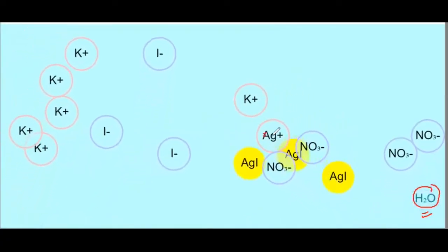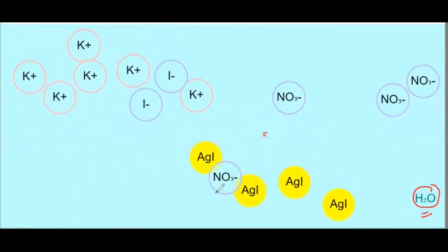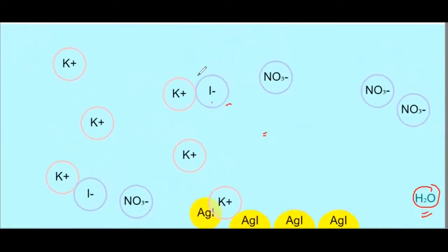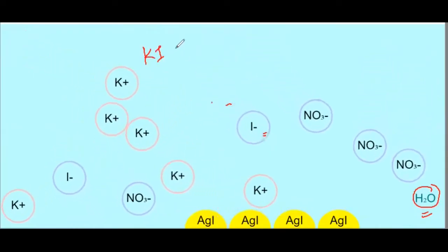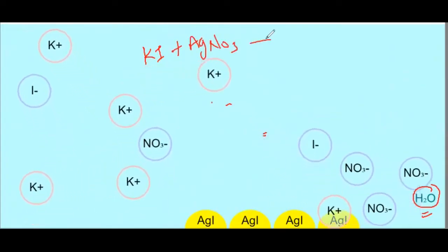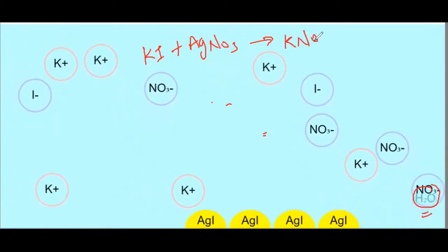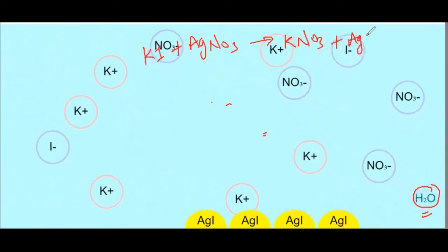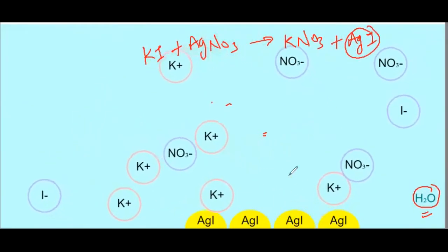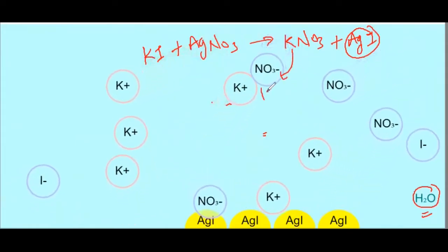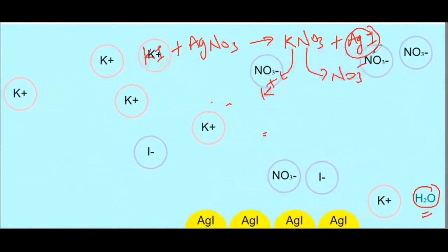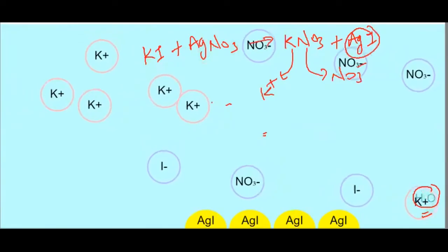जब एक silver ion, iodide ion के साथ interact कर रहा है, तो precipitate form हो रहा है। यह reaction इस तरह होगी: KI + AgNO3 → KNO3 + AgI। जो AgI है वो precipitate की तरह settle down हो गया, और जो KNO3 है वो K⁺ और NO3⁻ के form में release होगा।